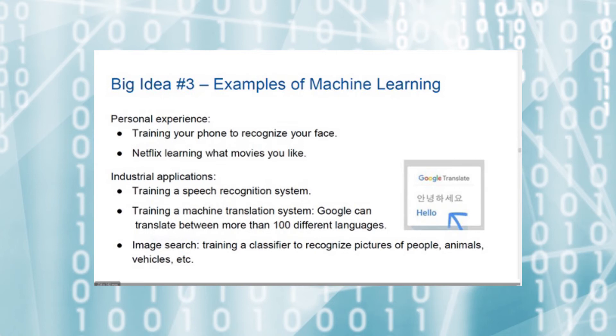Another application of machine learning is language translation. Google can now translate between a hundred different languages. Language translators are trained by exposing them to examples of the same text in two or more languages.